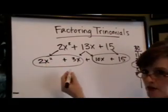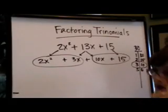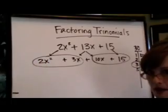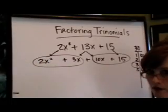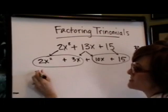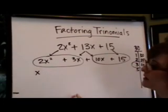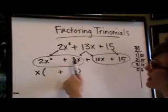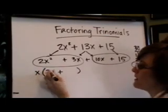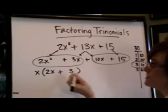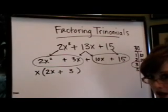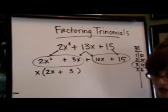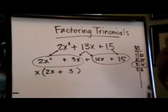My next step is to pull out a common factor from the first grouping. I notice there are no common numbers, but there is a common letter: X. I pull out the X and I'm left with 2X plus 3. I visually check — does this times this give me this? Yes it does. Does this times this give me this? Yes it does.